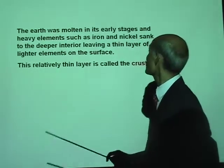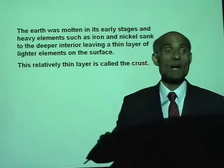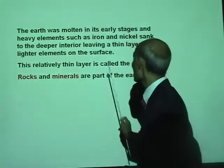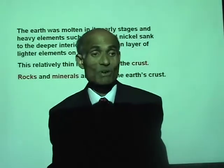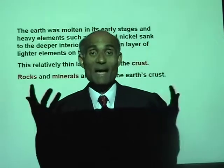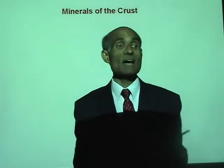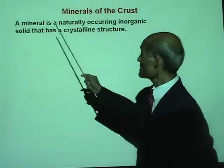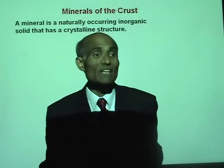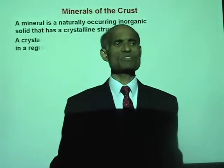This relatively thin layer is what we call the crust of the Earth. Rocks and minerals are part of the Earth's crust — in fact, the crust of the Earth is made of rocks and minerals. In today's lesson, we will concentrate on minerals and rocks. What is a mineral? A mineral is a naturally occurring inorganic solid that has a crystalline structure.